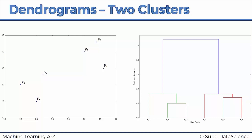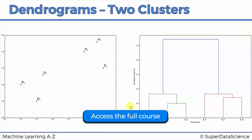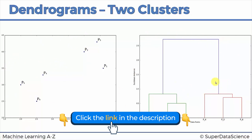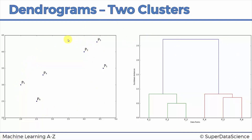Here we've got an example we looked at previously. On the left we've got the points in our scatter plot, and on the right we've got the dendrogram, which contains memory of how the clusters were formed during the hierarchical clustering algorithm. We can tell that p2 and p3 were combined first because their bar height is the lowest, then p5 and p6, then p1 was added to the p2-p3 cluster, p4 was added to p5-p6, and finally all points were combined into one cluster.